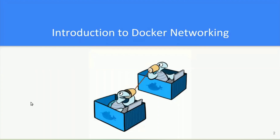There is a 1-to-n relation between host and containers — that is, one host can have n number of Docker containers running over it. Coming back to the previous question: how does Docker enable networking among those containers? The answer is software-defined networking architecture, which Docker networking provides. It comprises different network drivers through which communication is established.